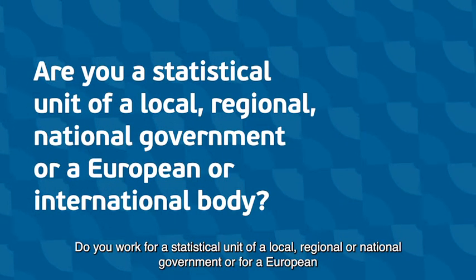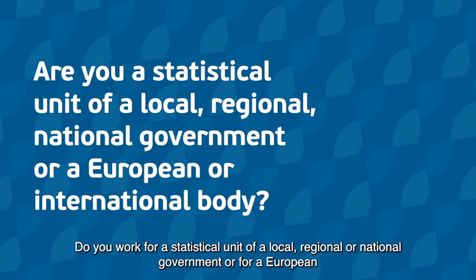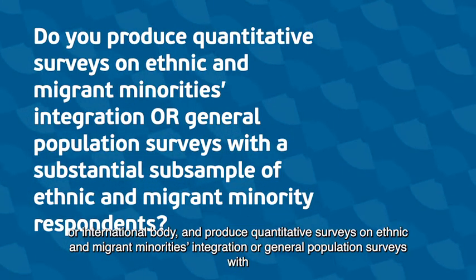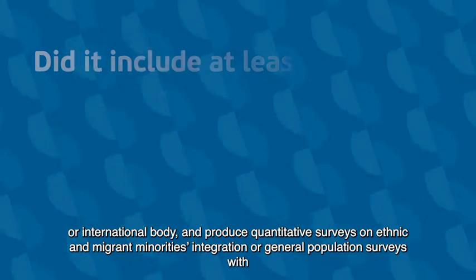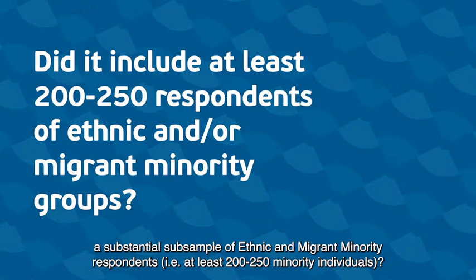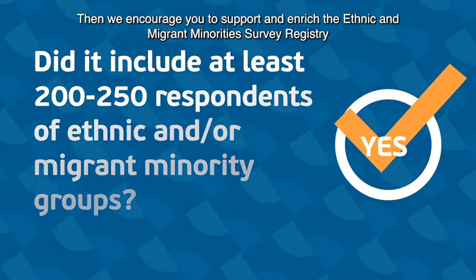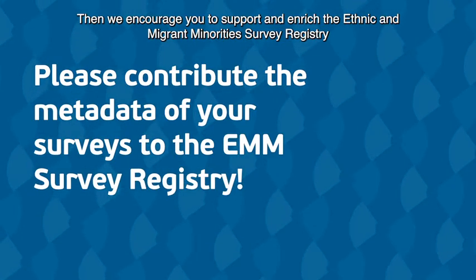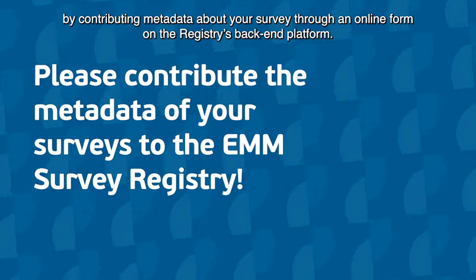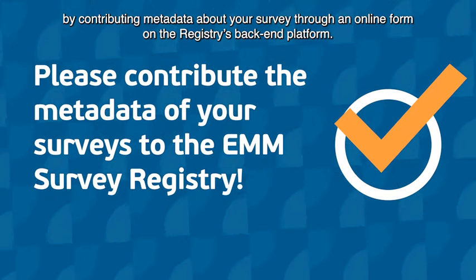Do you work for a statistical unit of a local, regional, or national government, or for a European or international body, and produce quantitative surveys on ethnic and migrant minorities integration, or general population surveys with a substantial subsample of ethnic and migrant minority respondents — i.e., at least 200 to 250 minority individuals? Then we encourage you to support and enrich the ethnic and migrant minorities survey registry by contributing metadata about your survey through an online form on the registry's back-end platform.